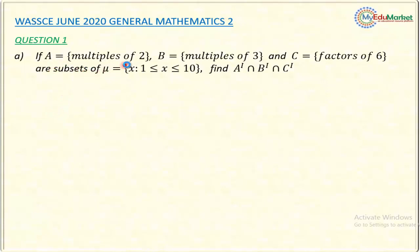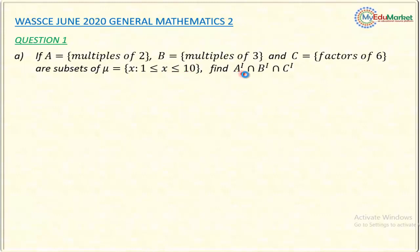If set A has elements as multiples of 2, set B has elements as multiples of 3, and set C has elements as factors of 6, these sets are subsets of the universal set U with elements X such that 1 is less than or equal to X and X is less than or equal to 10. The question asks us to find A complement intersect B complement intersect C complement.